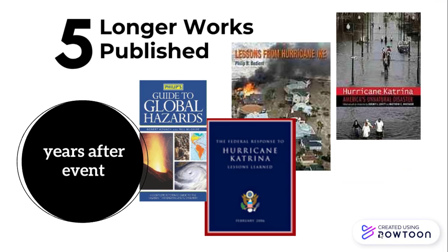Years after the event, you'll start to see longer works published. Longer works can include things like books, government reports, and anthologies. These can take years to reach publication. These works will often draw on all of the parts of the information cycle — they might incorporate some of the initial firsthand accounts from witnesses, early news stories, later news stories, peer-reviewed journal articles, and other works published long after an event. For this reason, you're unlikely to find a book on the library's shelves that has to do with something that took place weeks or months ago.